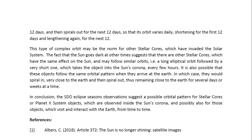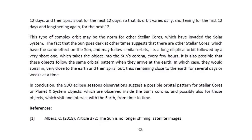This type of complex orbit may be the norm for other stellar cores which have invaded the solar system. The fact that the sun goes dark at other times suggests there are other stellar cores which have the same effect on the sun and may follow similar orbits — a long elliptical orbit followed by a very short one which takes the object into the sun's corona every few hours. It is also possible that these objects follow the same orbital pattern when they arrive at the Earth, in which case they would spiral in very close to the Earth and then spiral out, remaining close to the Earth for several days or weeks at a time. In conclusion, the STO eclipse season's observations suggest a possible orbital pattern for stellar cores or Planet X system objects observed inside the sun's corona, and possibly also for those objects which visit and interact with the Earth from time to time.